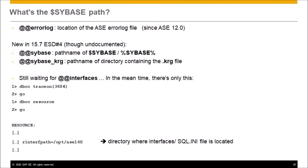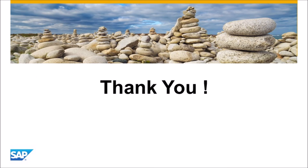There's also a useful diagnostic feature. We've always had @@errorlog, which tells you where the error log file is located. New in 15.7 ESD4, though never documented, is @@sybase, which tells you the path name of the Sybase root directory where your ASE installation is located — very useful for tools. Likewise, @@sybase_krg tells you where those .krg files are located. If you really want to know where the interfaces file is, you have to use DBCC RESOURCE and look for the r-interf-path line. I hope you find these tips and tricks useful.